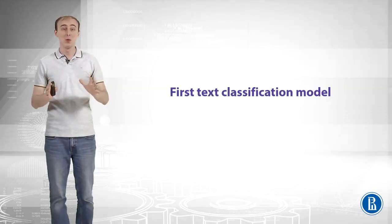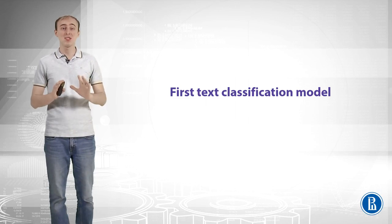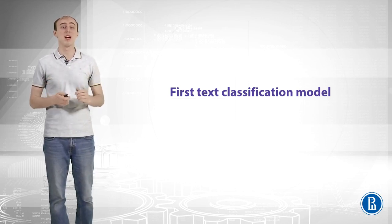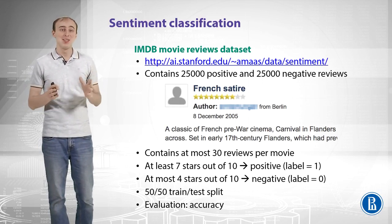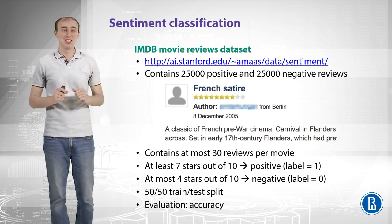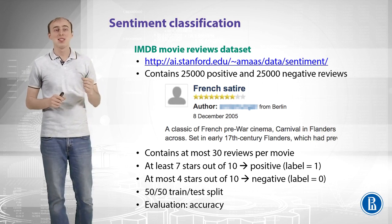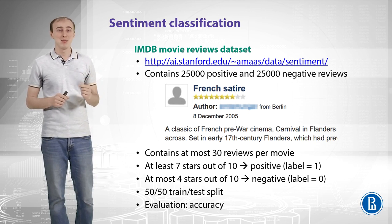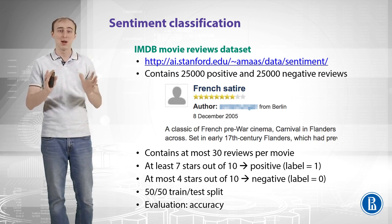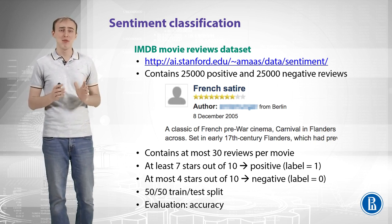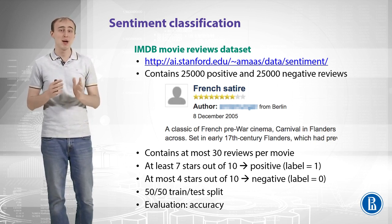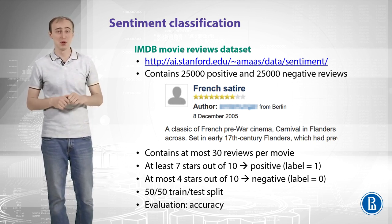In this video we will talk about our first text classification model on top of features that we have described. Let's continue with sentiment classification. We can take the IMDB movie reviews dataset, which you can download — it is freely available. It contains 25,000 positive and 25,000 negative reviews.